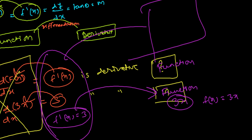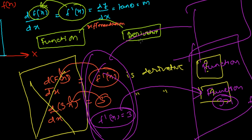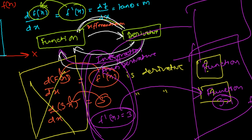So, differentiation of a function gives the derivative, and integration of the derivative gives back the function. Differentiation and integration are just opposite processes — that's why integration is called anti-derivative. They are the reverse of each other.